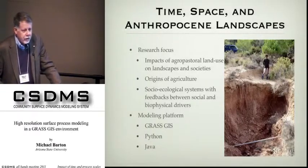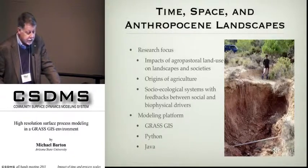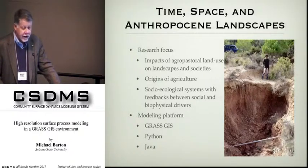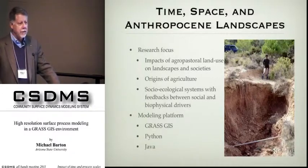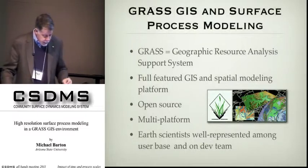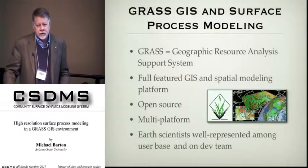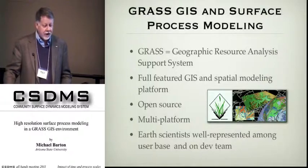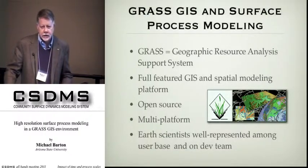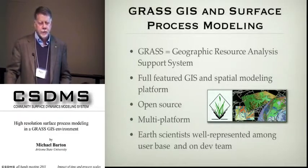The modeling platforms we use are diverse, and we make extensive use of open source technology. We couple numerical modeling with discrete event and agent-based modeling. We use GRASS GIS, Python, and Java primarily, with some other things thrown in. Because there's an interest in including GRASS in the CSDMS toolset, James asked me to say a few words about GRASS and its potential for surface process modeling.